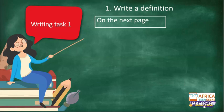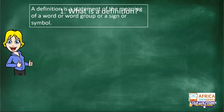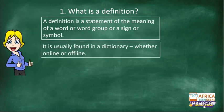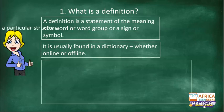It sounds very simple — just to write a definition of a word — but it's not as simple as we think. A definition is a statement of the meaning of a word; sometimes there's a group of words, a sign, or a symbol. We usually find definitions in a dictionary, whether online or offline. I use an online dictionary all the time because I'm usually on my laptop.